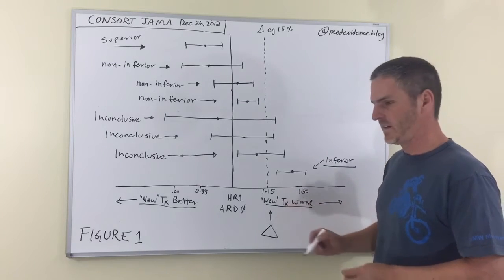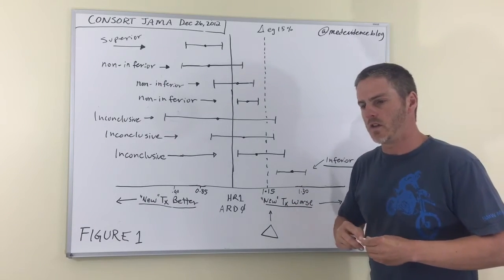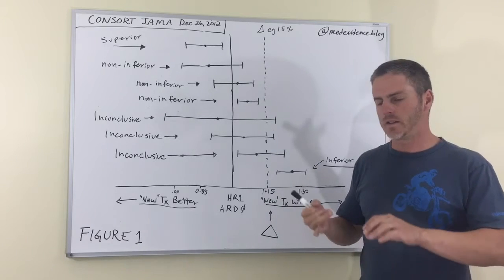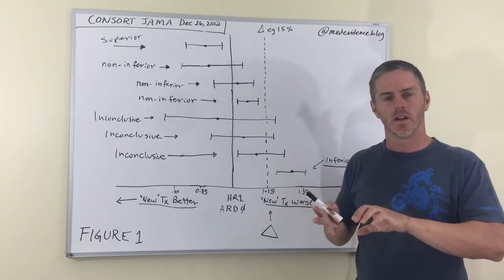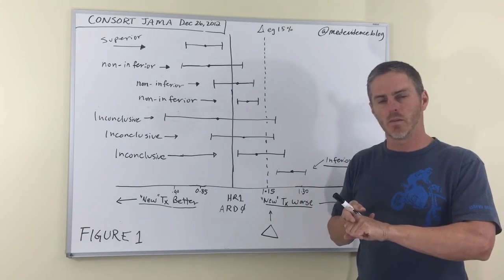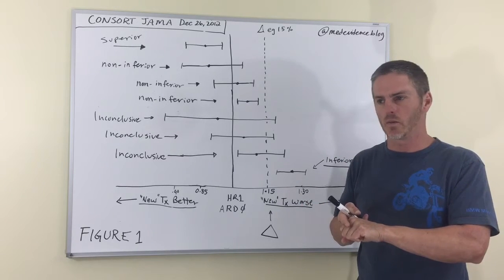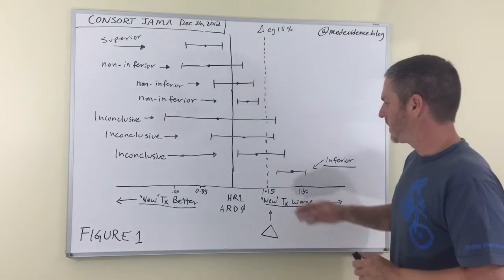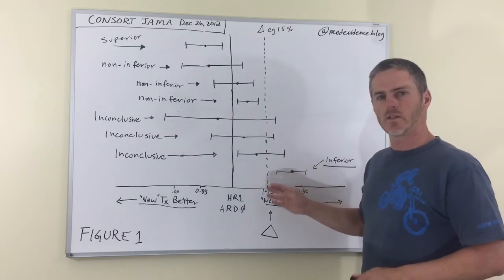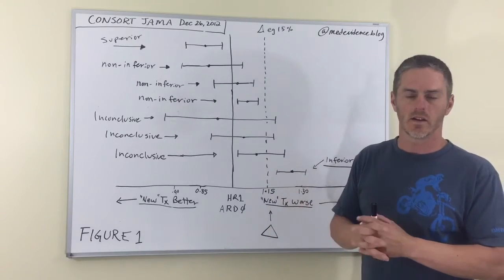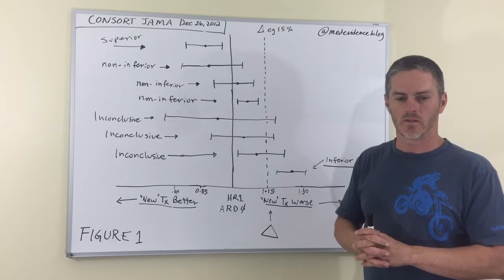And somewhere along there, you have to assign a delta or a value where you think the difference is smaller than this, either on the basis of some kind of logical argument or prior precedence or differences between placebo and active comparators that were historically observed, assuming that those are reliable. You can say that as long as the difference isn't greater than this delta value, we can consider the treatment to be non-inferior.